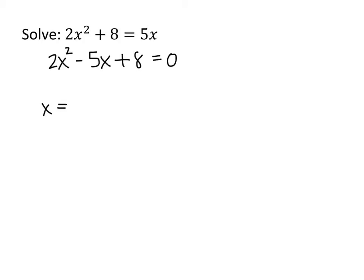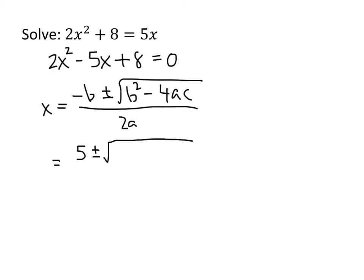So we get x equals negative b, plus or minus the square root of b squared, minus 4ac, all divided by 2a. So our b is negative 5, so minus minus 5 is positive 5, plus or minus the square root of b squared, so that's negative 5 squared, minus 4ac. a is 2, c is 8. Divide it by 2a, which is 2 times 2.